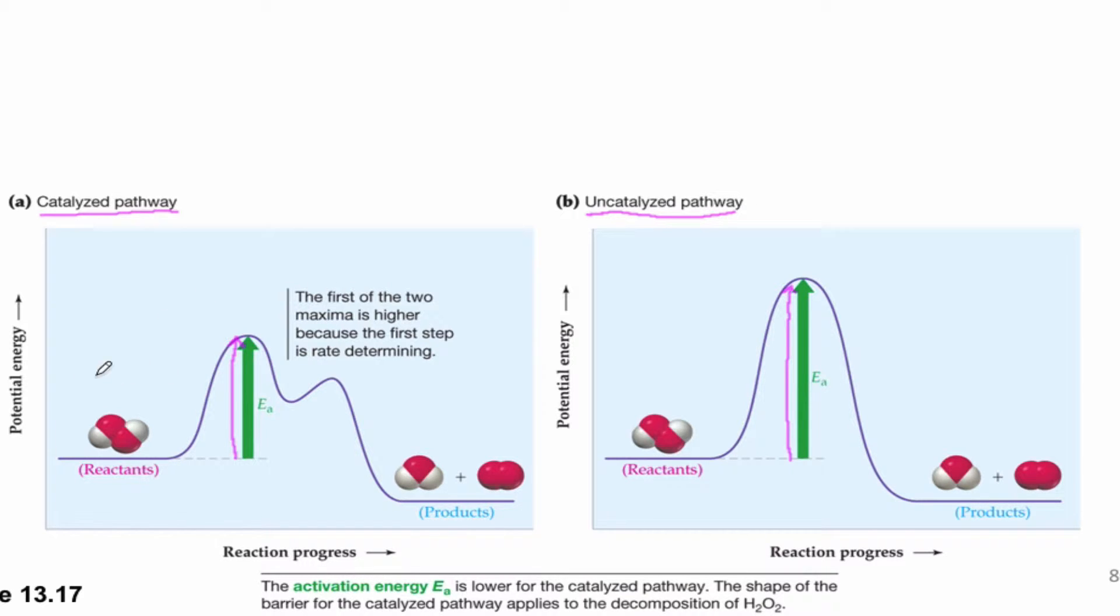It's probably worth adding to the catalyzed pathway the catalyst itself. We don't know its structure, but let's just call it C for now. It's going to appear both on the reactant side and on the product side, the catalyst C, in the catalyst pathway.